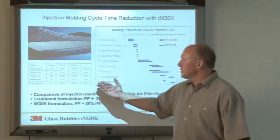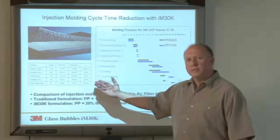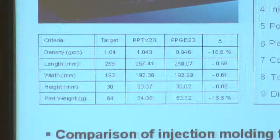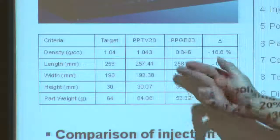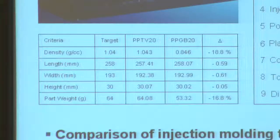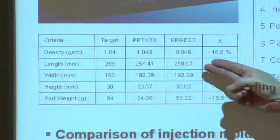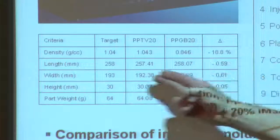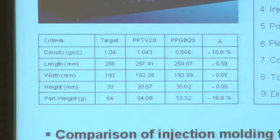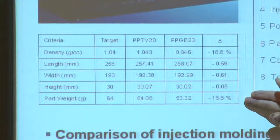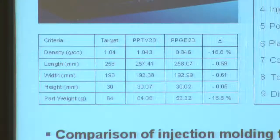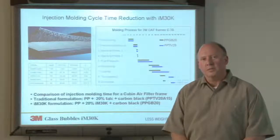In this table, you can see an improvement in dimensional stability. The target dimensions are shown here for length, width, and height. With the 20% talc-containing material, there's significant shrinkage in most cases and an increase in the height dimension. For the glass bubble sample, we much more closely match the target in each case, so our delta from the mold is much less with the glass bubble-containing material.